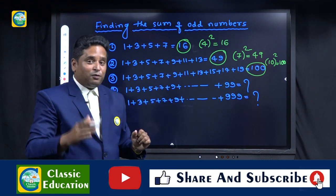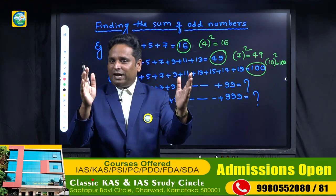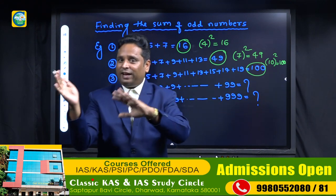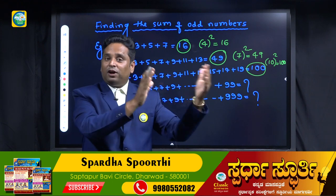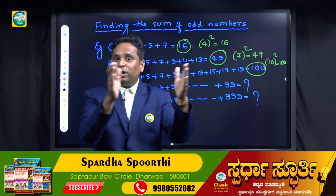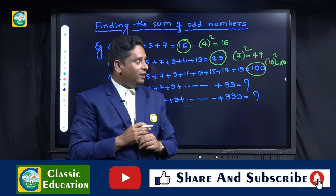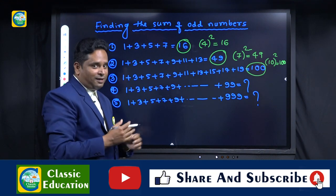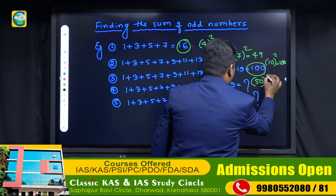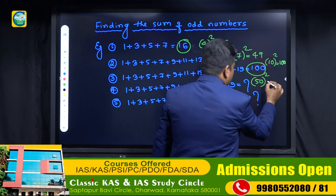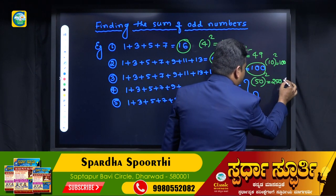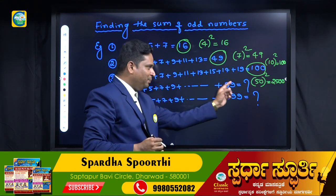From 1 to 99, how many odd numbers will there be? From 1 to 100 there are 50 odd numbers and 50 even numbers. So from 1 to 99 there will be 50 odd numbers. Square 50. Five squared is 25, and 50 has one zero so add two zeros — giving 2,500. That is the sum of odd numbers from 1 to 99.